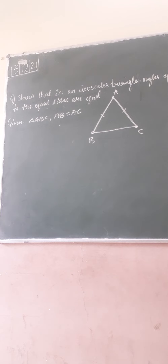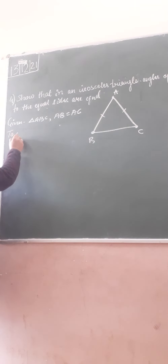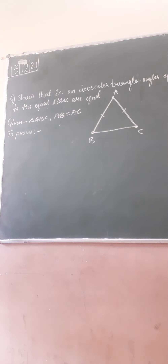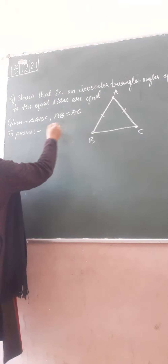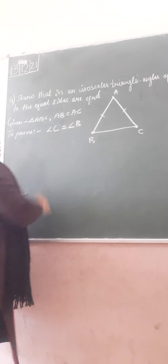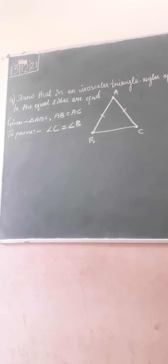Which two sides have we taken equal in this triangle? AB and AC. Now, to prove — what do we have to prove? We have to prove that angle B is equal to angle C. Since AB is equal to AC, we have to prove that angle C will be equal to angle B.